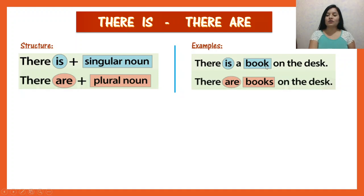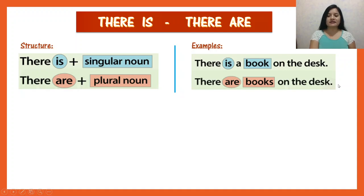'There is a book on the desk' — hay un libro sobre el escritorio. Next example: 'There are books on the desk' — remember, books is plural, so we use 'there are'. Hay libros sobre el escritorio.